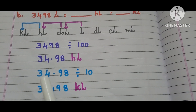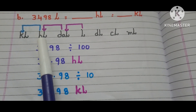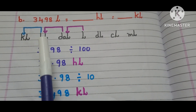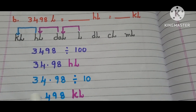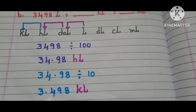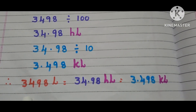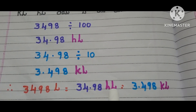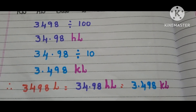Now, convert 34.98 hectoliters into kiloliters. Where are hectoliters in the table? Here it is. Where are kiloliters? Here it is. Here we have to move from right side to left side only one step. So, divide 34.98 with 10. Then it becomes 3.498 kiloliters. Therefore, 3498 liters is equals to 34.98 hectoliters and that is equals to 3.498 kiloliters.